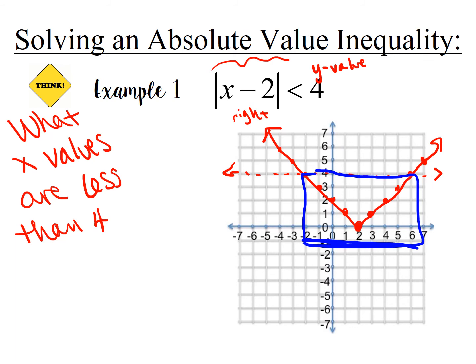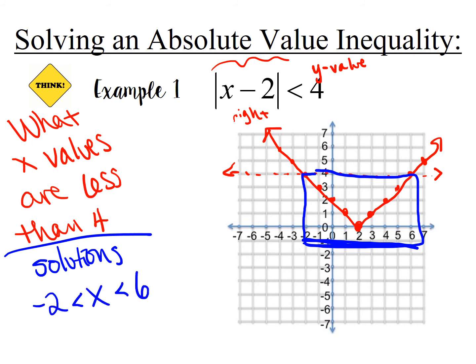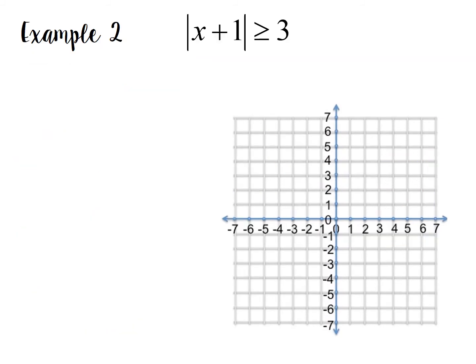Our solutions for x are between 6 and negative 2: x is less than 6 and x is greater than negative 2. The same logic applies for greater than or equal to — if there's an 'or equal to,' it works the same way. Now consider the graph of y equals the absolute value of x plus 1, which shifts the graph up one from the parent function.